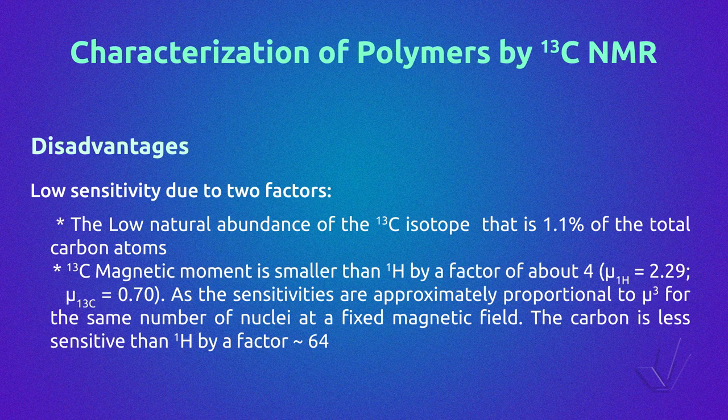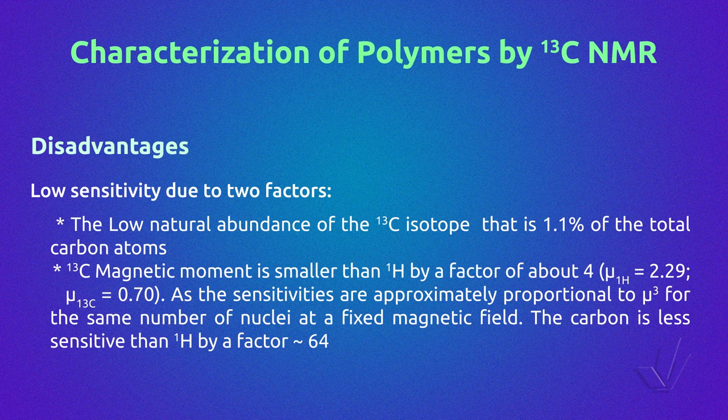As sensitivity is proportional to the magnetic moment cubed at a fixed magnetic field, carbon is less sensitive than proton by a factor of 64. Another disadvantage of carbon-13 NMR is that it is not quantitative unless special conditions are used.